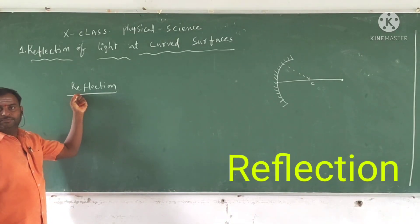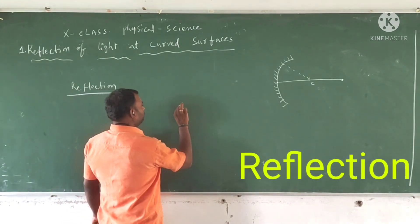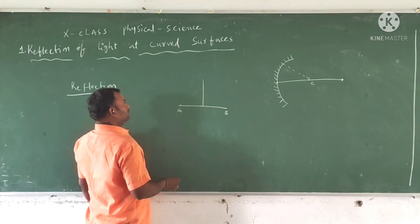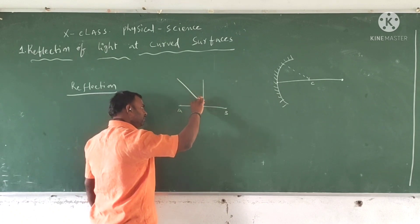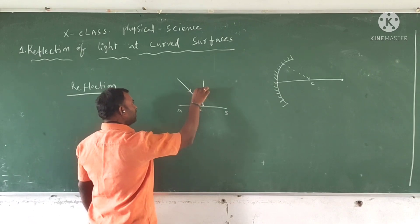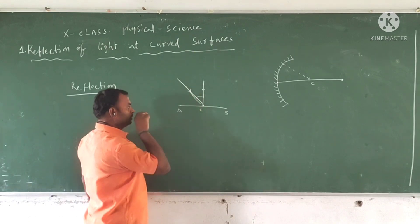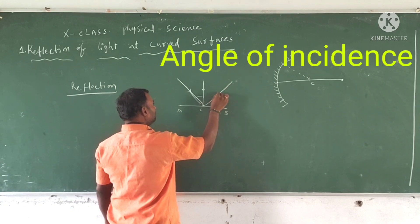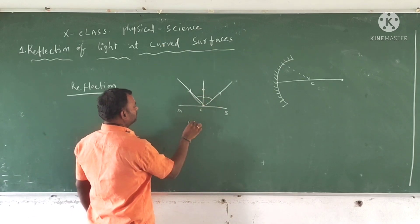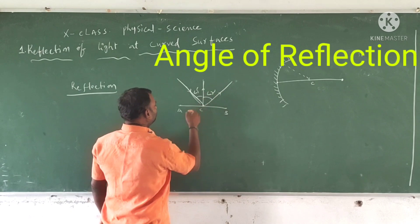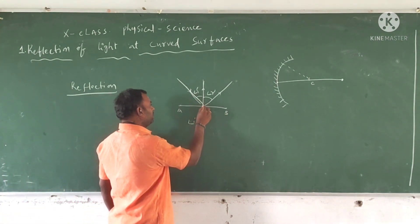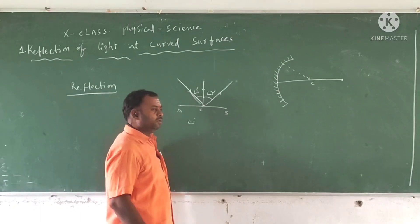So what does reflection mean? This is the plane surface — A B is the plane surface. The normal is drawn perpendicular to the surface at the point of incidence, suppose C. This is the incident ray and this is the normal. The angle between the normal and incident ray is called angle of incidence. This is the reflected ray. The angle between the incident and the reflected ray gives the angle of reflection, I and R. So any ray passing through incident on one surface and reflected back to the same medium is called reflection.